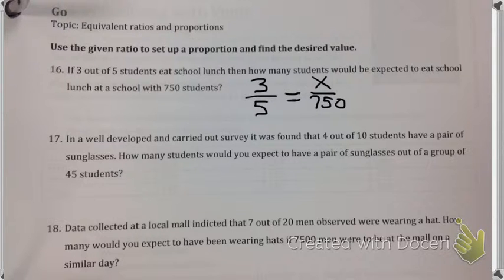To solve proportions, we cross-multiply. So 750 times 3 would be 2,250. So 2,250 equals 5x.